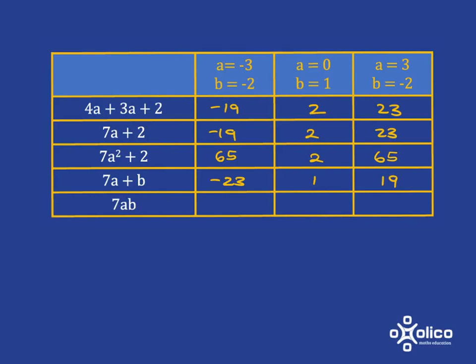And then for this last one, we're going to have 7 times negative 3, which is negative 21 times negative 2, which is going to be positive 42. And again, we'll fill in the other two in a similar way.